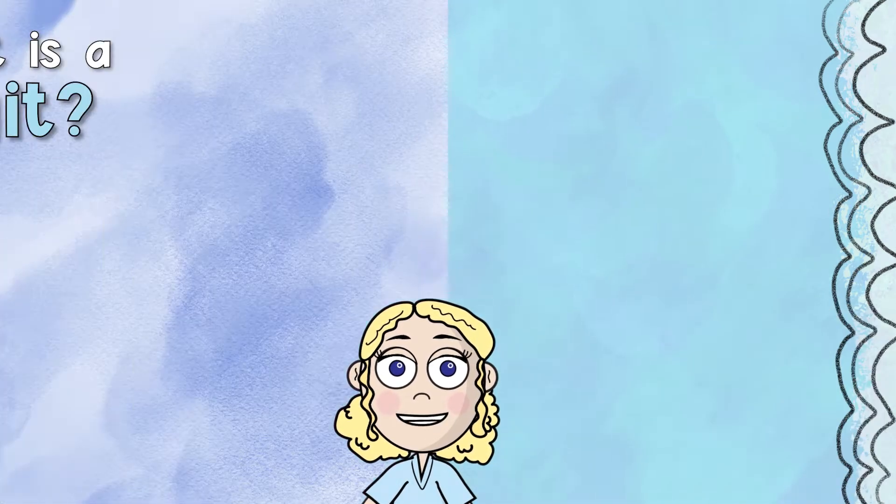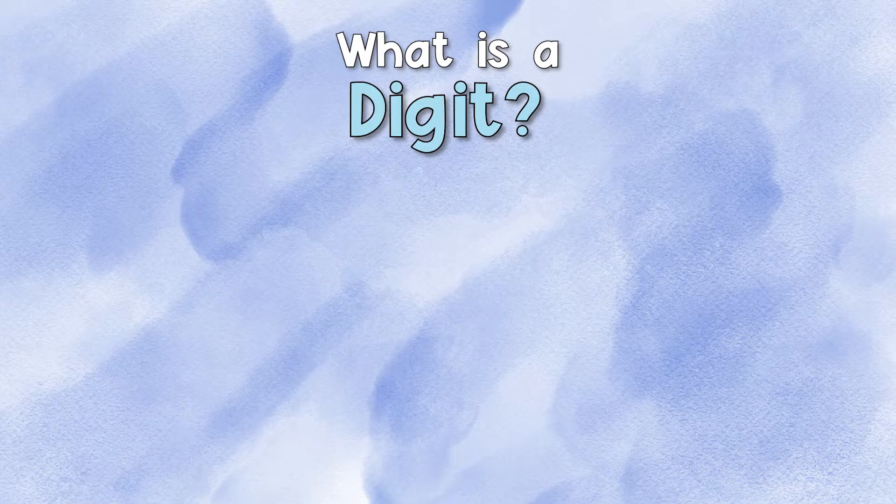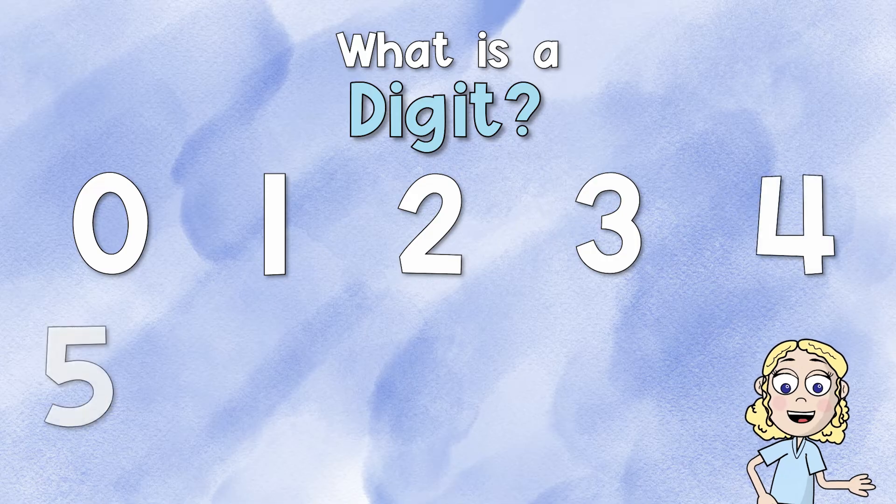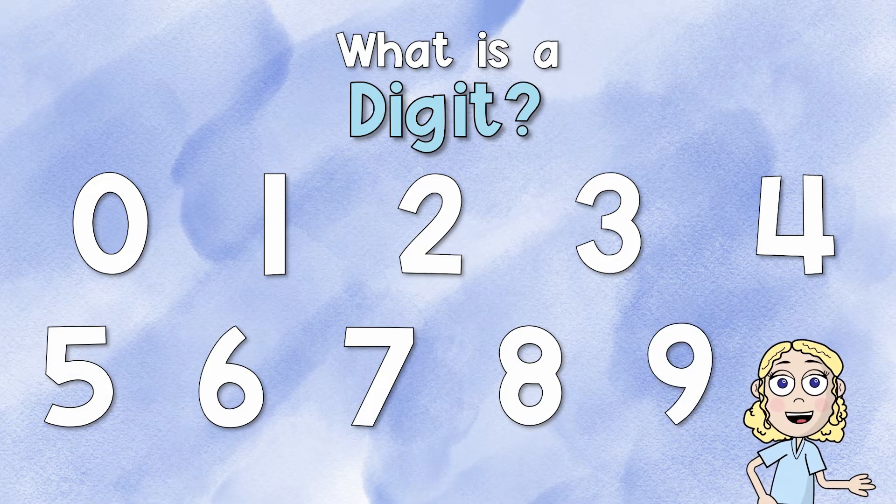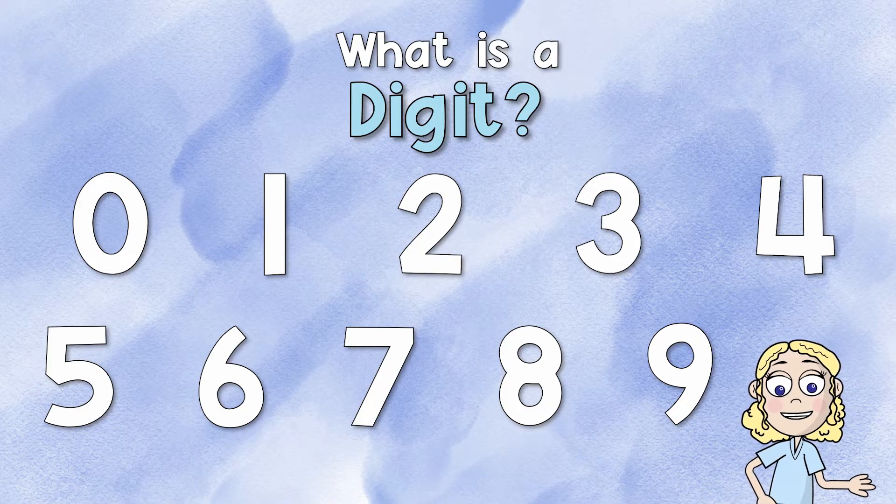Okay, so what exactly is a digit? We have 10 digits. Those digits are 0, 1, 2, 3, 4, 5, 6, 7, 8, and 9. We use those digits in order to show what we have in each place value.